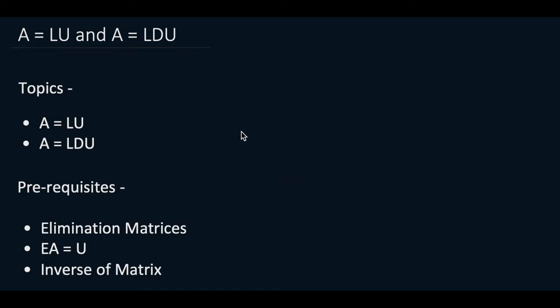Hello friends, welcome to the topic on linear algebra. Today's topics are A equals LU and A equals LDU. We will be factorizing our matrix A into L and U, where L is our lower triangular matrix and U is our upper triangular matrix. Then we will be factorizing it further into the form of LDU, where D will be our diagonal matrix.